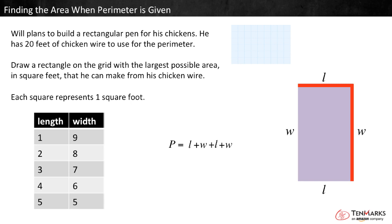We can stop here because a rectangle with a length of 6 would have a width of 4. This is the same as the rectangle with a length of 4 and a width of 6, just turned on its side.